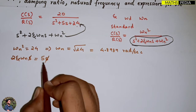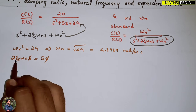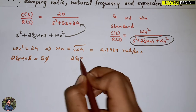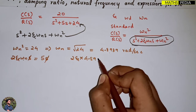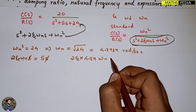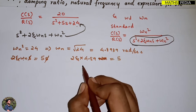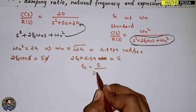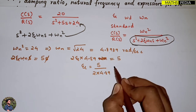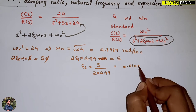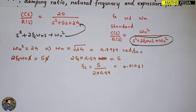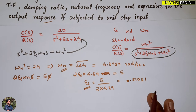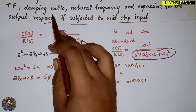Next, comparing the s-term: 2ζωn equals 5. Substituting ωn = 4.89, we get 2ζ×4.89 = 5, so ζ = 5/(2×4.89) = 0.51031. There is no unit for the damping ratio. So the damping ratio is 0.51031 and the natural frequency is 4.8989 rad/s.